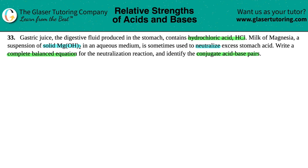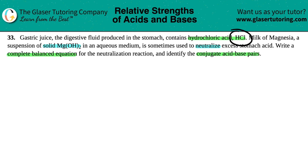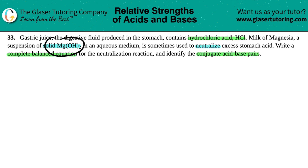So they're saying that milk of magnesia, Mg(OH)₂, is used to neutralize the stomach acid, aka gastric juice, and that's HCl. So we just have to come up with a balanced equation for what's going on when HCl, the stomach acid, reacts with milk of magnesia, the Mg(OH)₂. So let's go for it. We have HCl plus Mg(OH)₂, and some reaction is going to happen.